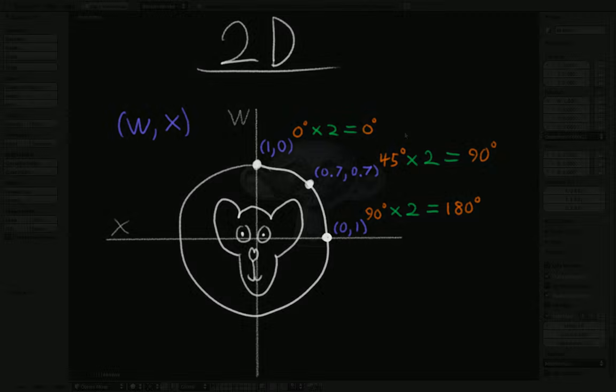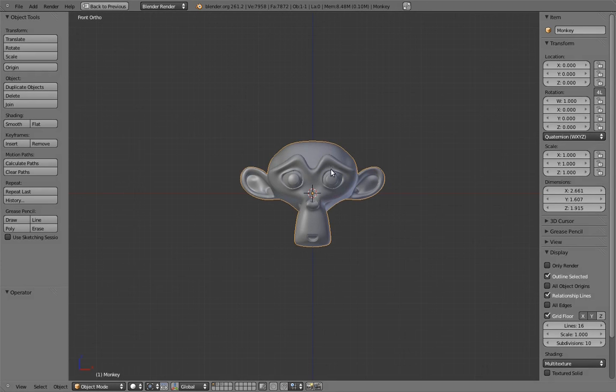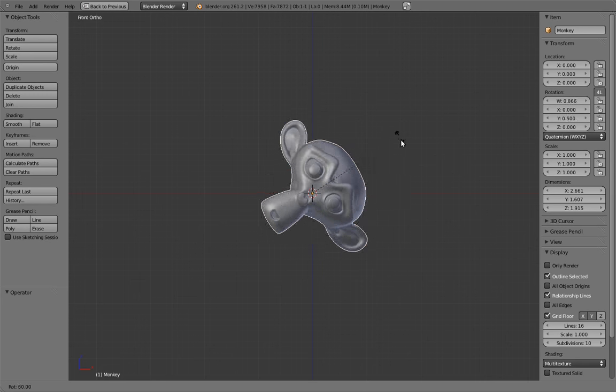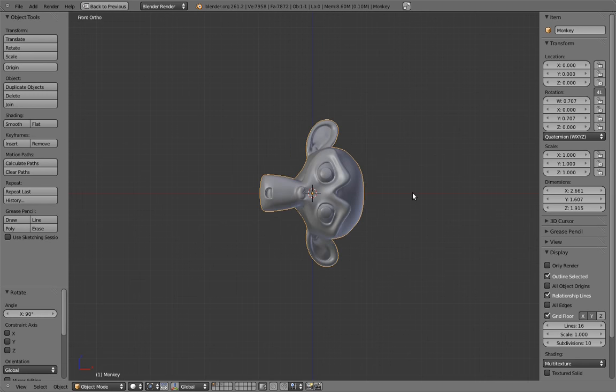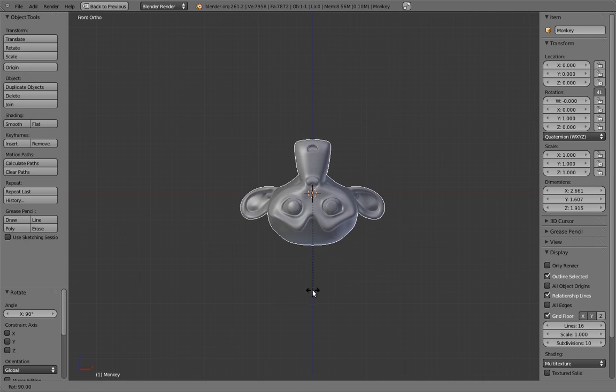So let's try it out in Blender. We have this monkey head, and its rotation mode is set to quaternion. As we rotate it on one axis, say 90 degrees, we see that the values relevant to that axis shift approximately to 0.7, 0.7 as we predicted, because 0.7, 0.7 is 45 degrees when plotted on a circle, and the double of 45 degrees is 90 degrees. And as we approach 180 degrees, the axes shift to 0, 1, also as we expected. And this works for the other axes too.